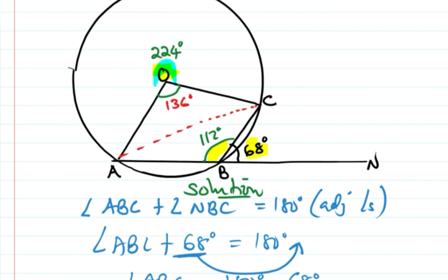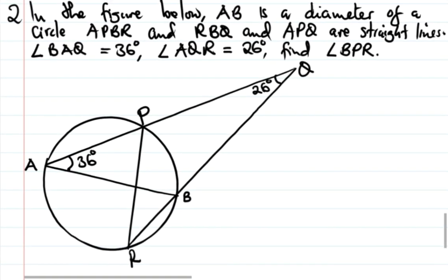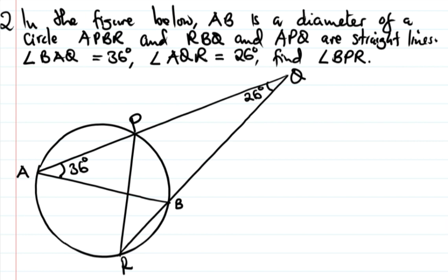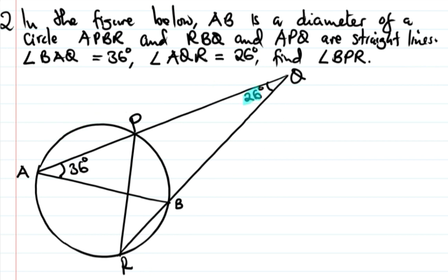We are done with question number one. Question number two: in the figure, AB is a diameter. ABQ and ABR are straight lines. We are given that angle BQR is 26 degrees and angle BAQ — that is, angle BAP or Q — is 36 degrees.